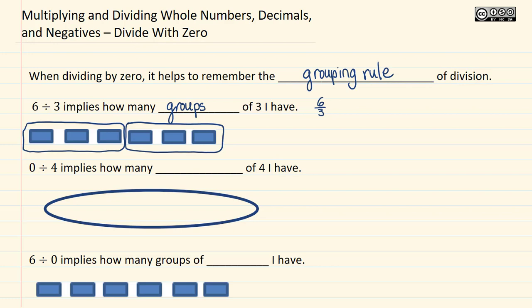Zero divided by four implies how many groups of four I have. So if I have zero and I divide it by four, I'm still only gonna have zero groups. There's nothing in here, so zero divided by four equals zero. And up here we talked about two.